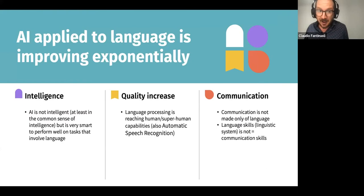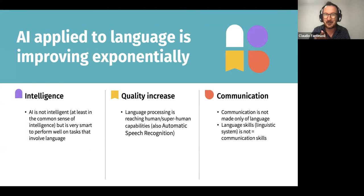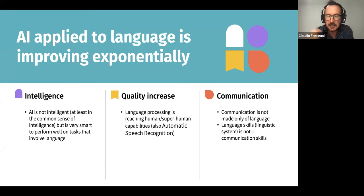AI is not at all intelligent. Also when AI is applied to language, AI is not intelligent. However, the capability of AI to solve problems in the language domain is improving — and not in a linear way, but in an exponential way. So it's accelerating. AI applied to language doesn't need to be intelligent to solve problems, and this quality increase has brought us to develop AI solutions that can reach human level or even superhuman level when talking about language processing.